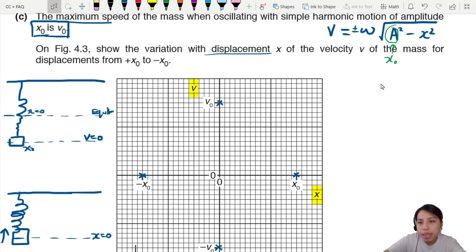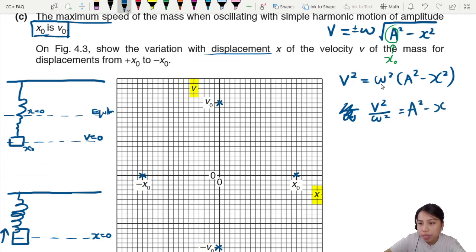Let's remove the square root first because the square root makes me very scared. Remove square root, square everything: V squared equals omega square A square minus X square. And this looks kind of familiar. I can write this as V square over omega square equals A square minus X square. Or I can shift it this way: V square plus X square equals omega square A square.